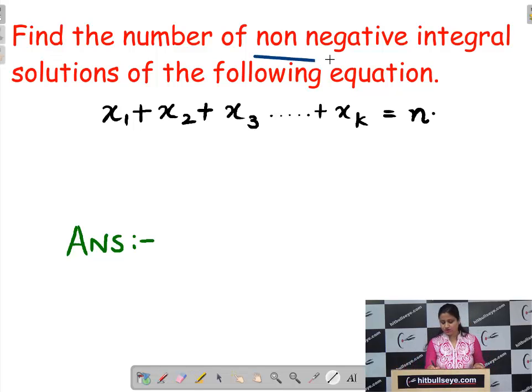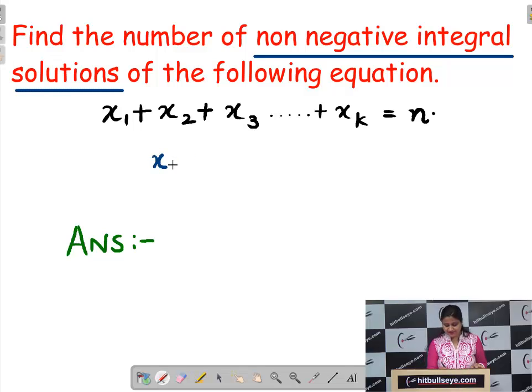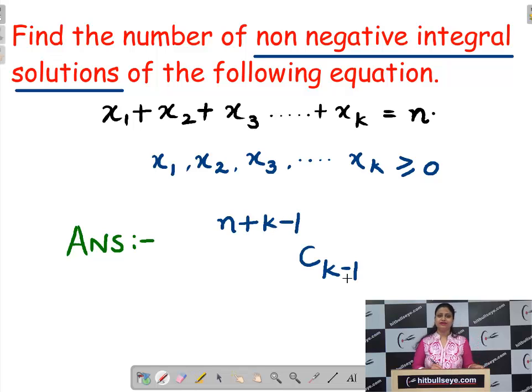What do you mean by non-negative integral solutions? It means x1, x2, x3 so on up to xk, they all should be greater than or equal to 0 because 0 is neither a positive nor a negative number. What is the answer to this? It will be n plus k minus 1 choose k minus 1.